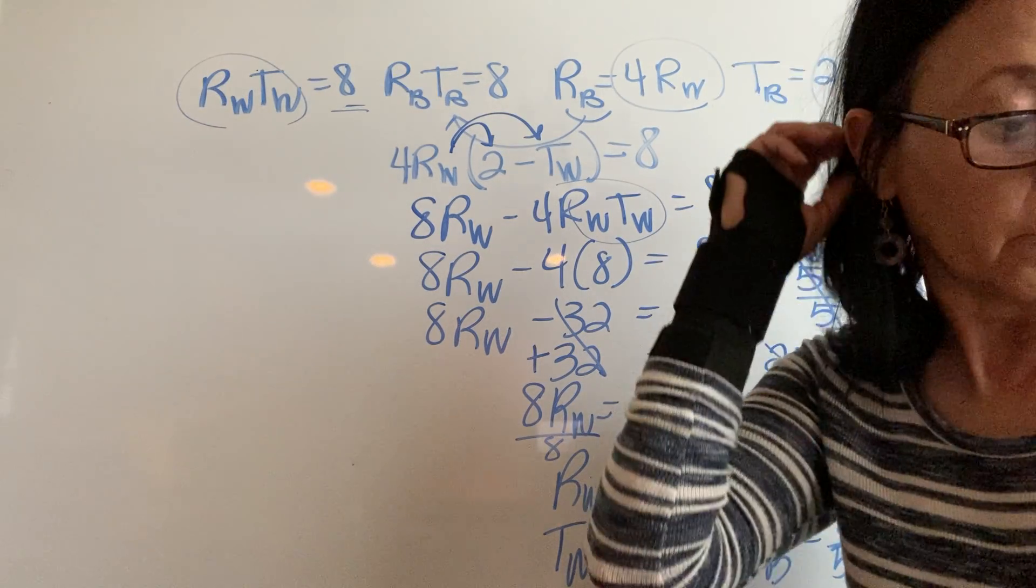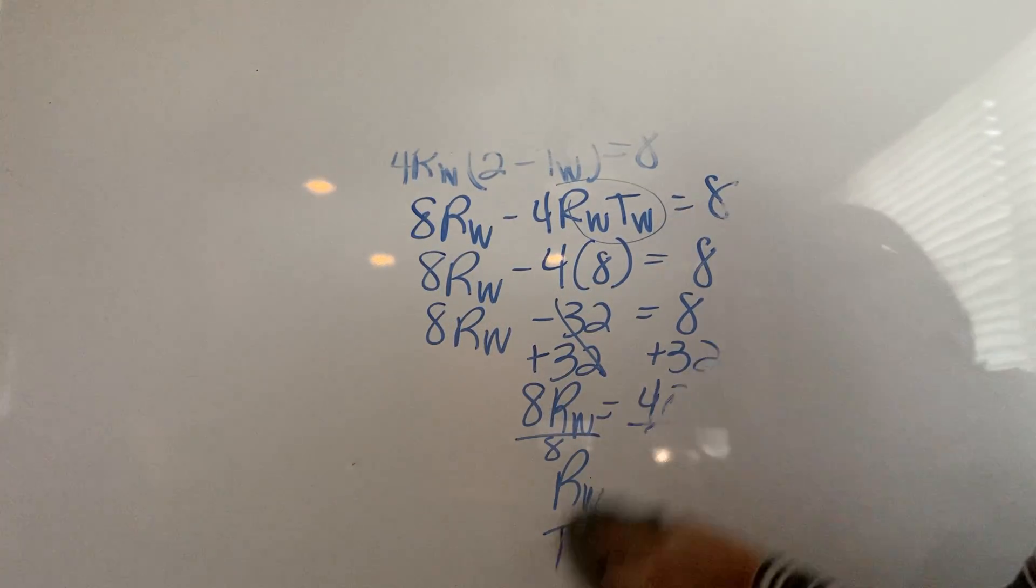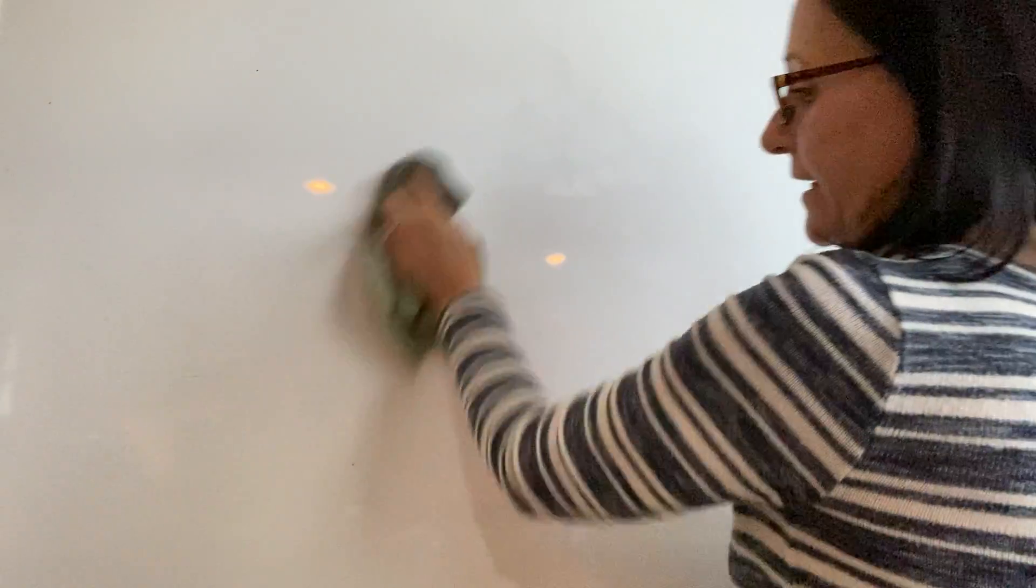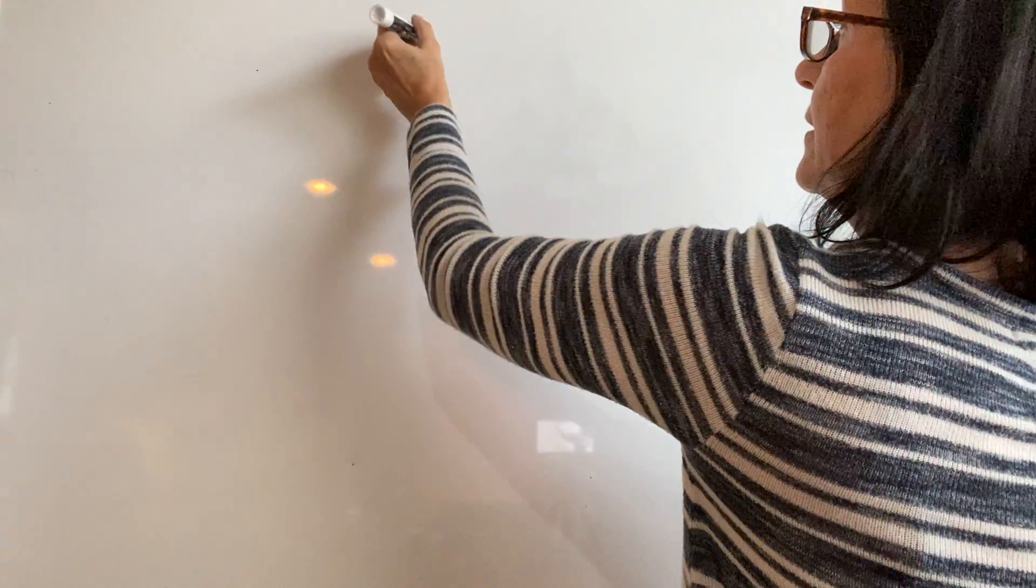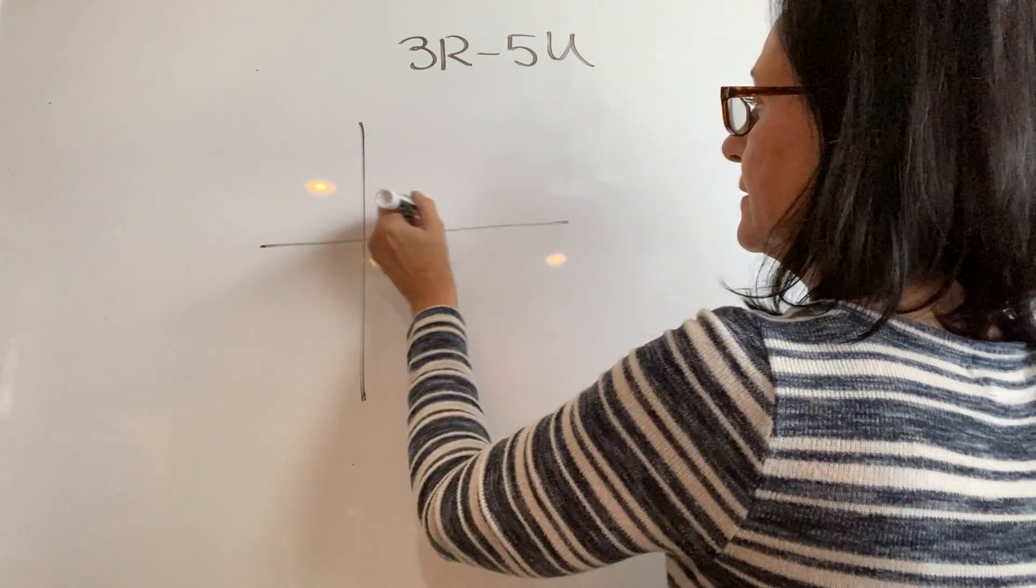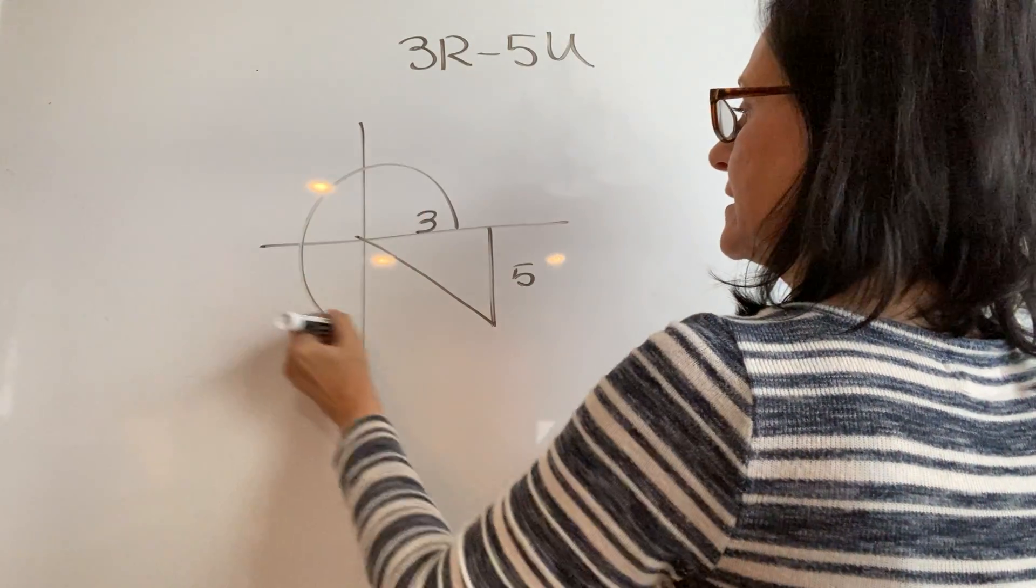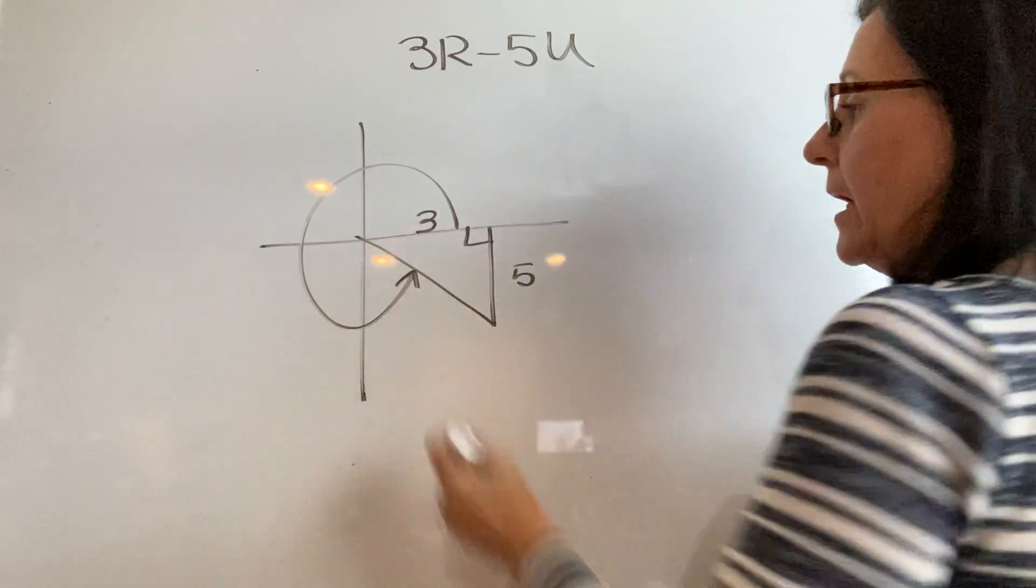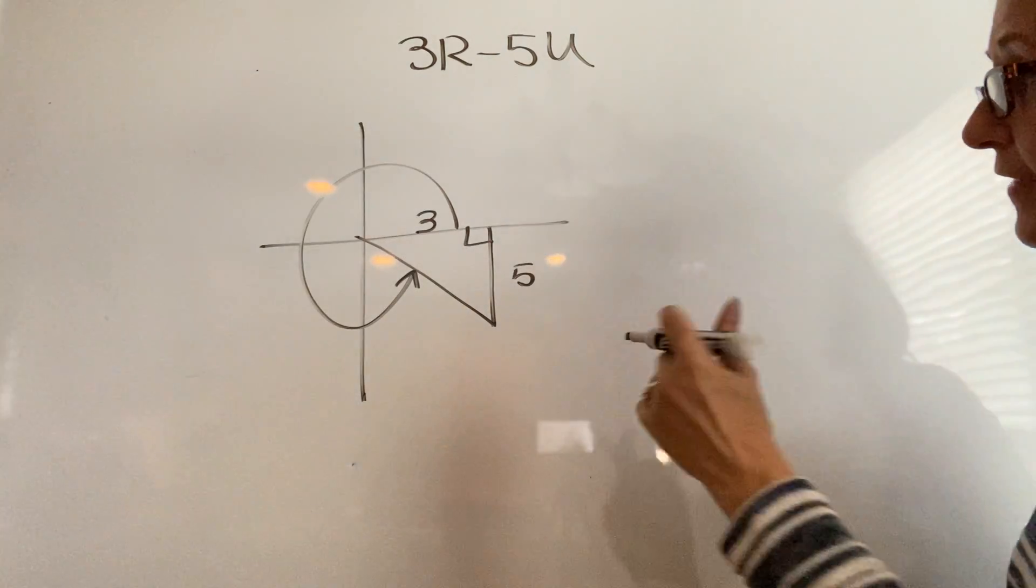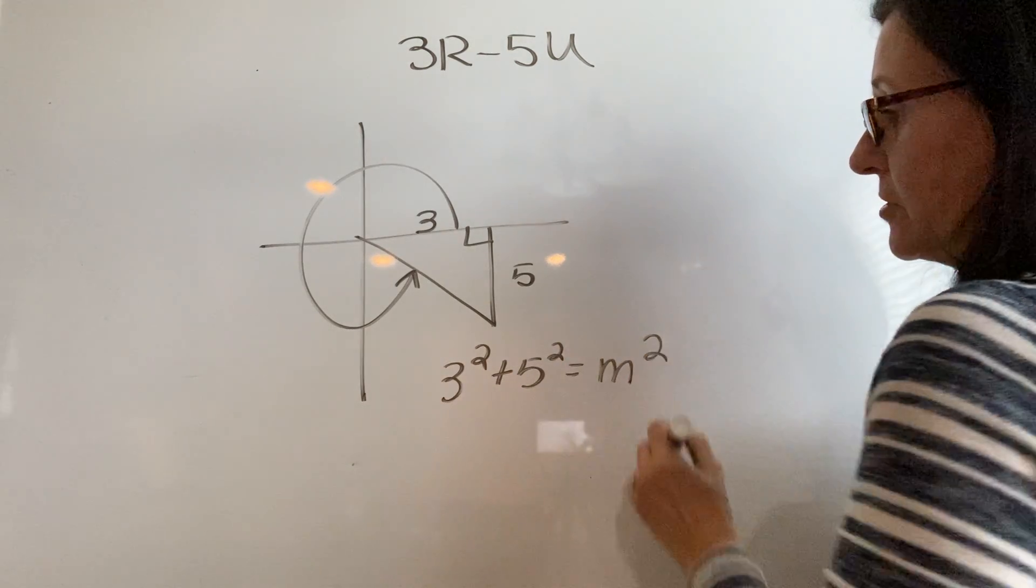Number 16 is to write 3r minus 5u in polar form. Polar form gives me the magnitude at the angle. I always draw the vector, 3r minus 5u. The 3 is positive, the 5 is negative, it's in this quadrant. This is going to be my angle. I use the Pythagorean theorem to solve the hypotenuse. 3 squared plus 5 squared is going to be the magnitude squared.